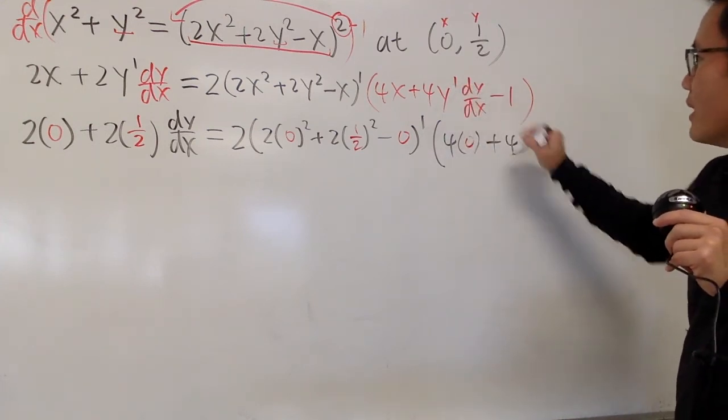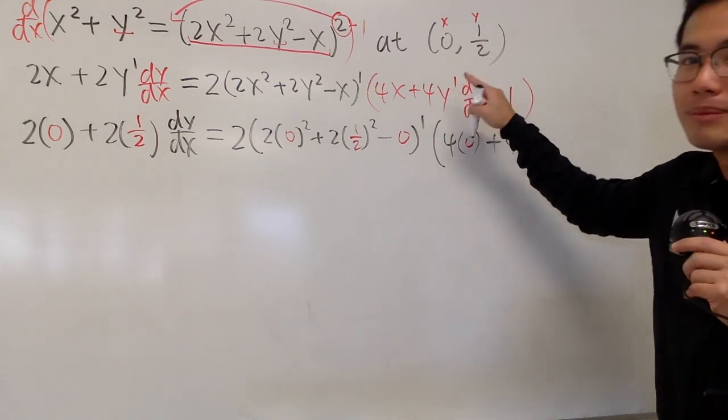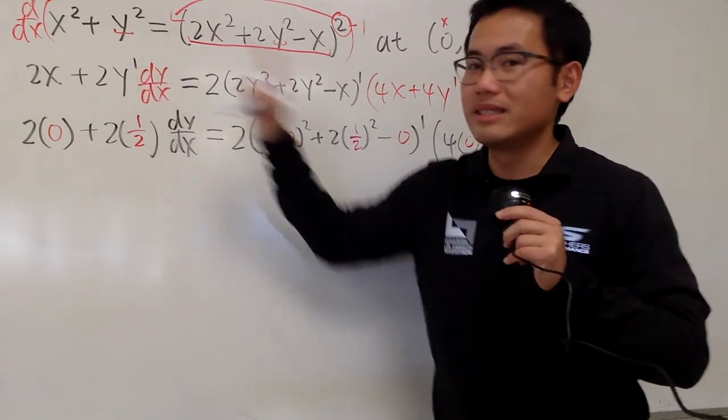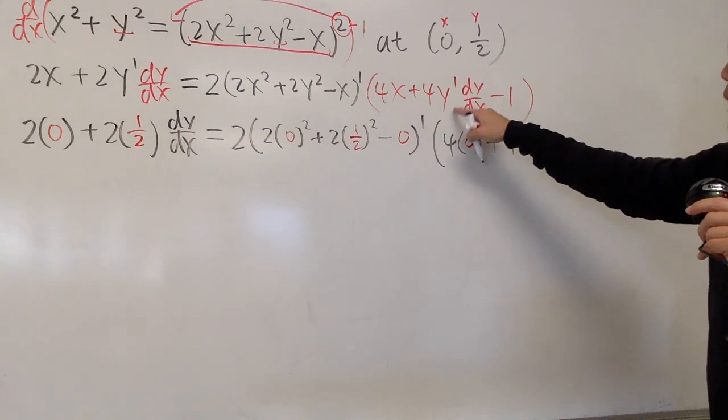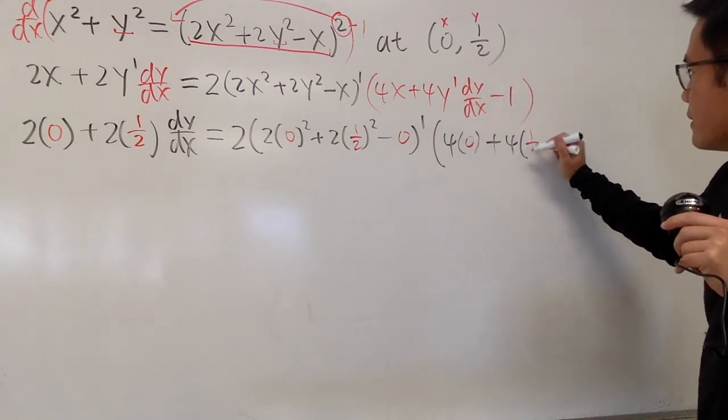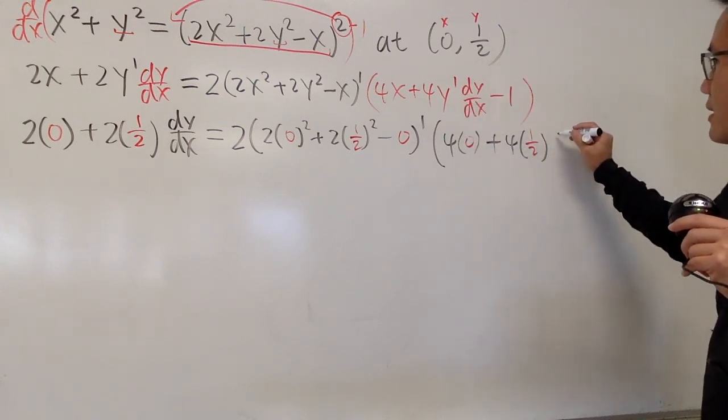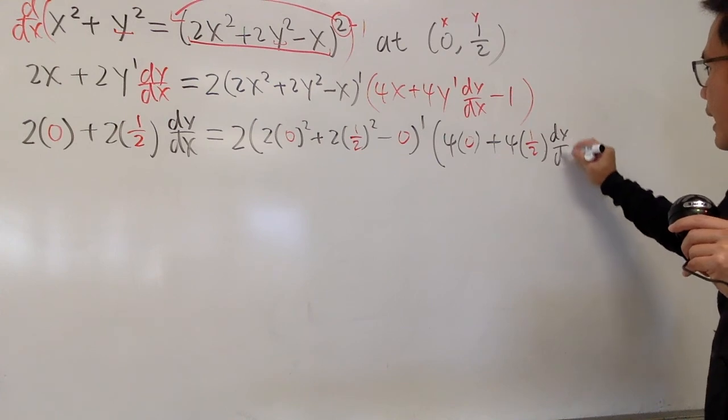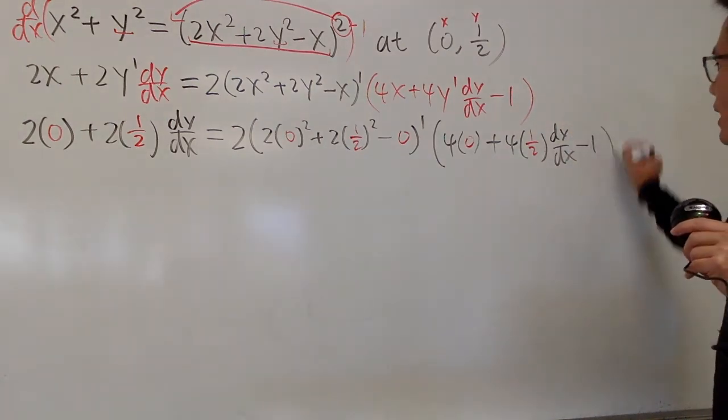Plus, 4 times y to the first power. This is not the prime, this is the first power, right? Just to emphasize, this is the first power, right? Alright, y is 1 half. So, we have the 1 half. And then, the dy dx is the one that we're looking for. And, lastly, we have the minus 1, like this.